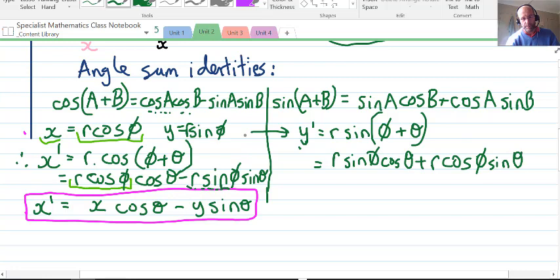So we have r sinφ cosθ + r cosφ sinθ. We already noted that x = r cosφ and y = r sinφ, so we can replace these. That will be y cosθ and that one will be x sinθ.